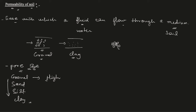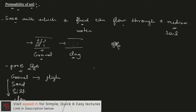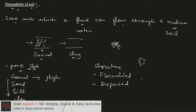Apart from pore size, another factor affecting permeability is soil structure. We generally talk about two types: flocculated and dispersed structure. In flocculated structures the pores formed are generally larger than in dispersed structures, because dispersed structure is much more arranged. Therefore, soil with flocculated structure will have higher permeability compared to soil with dispersed structure.